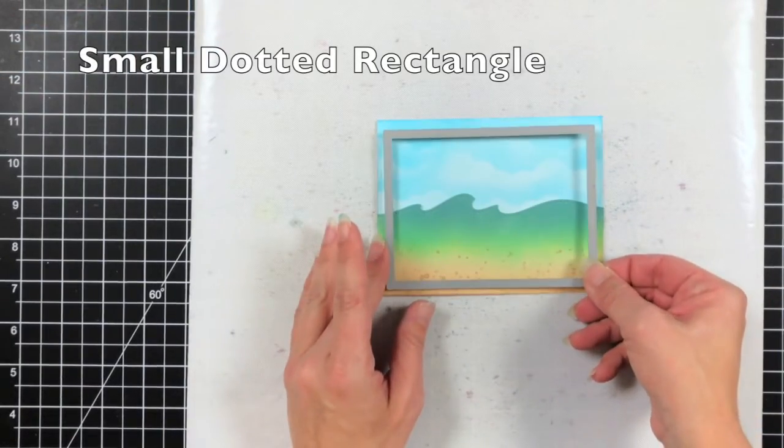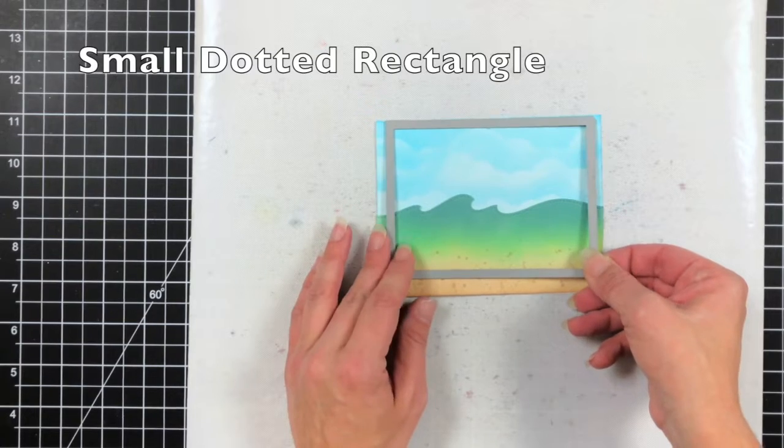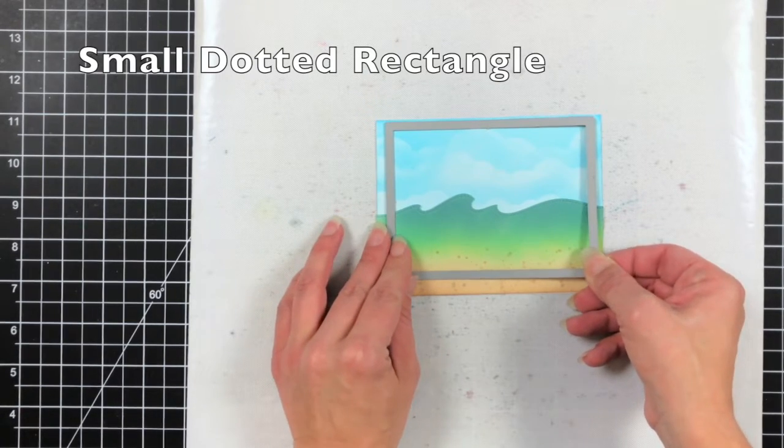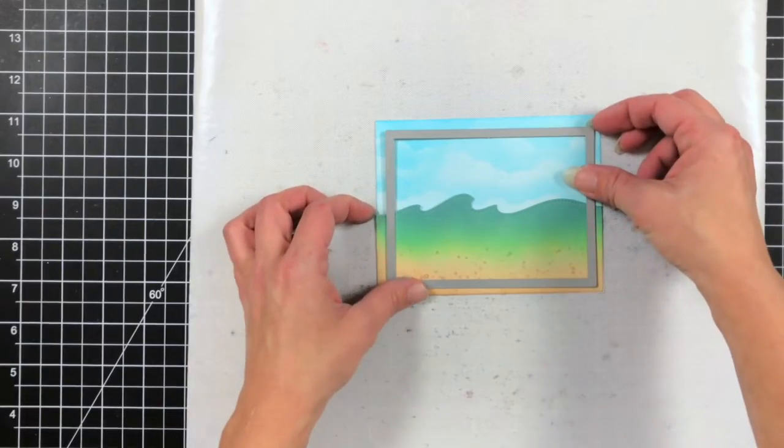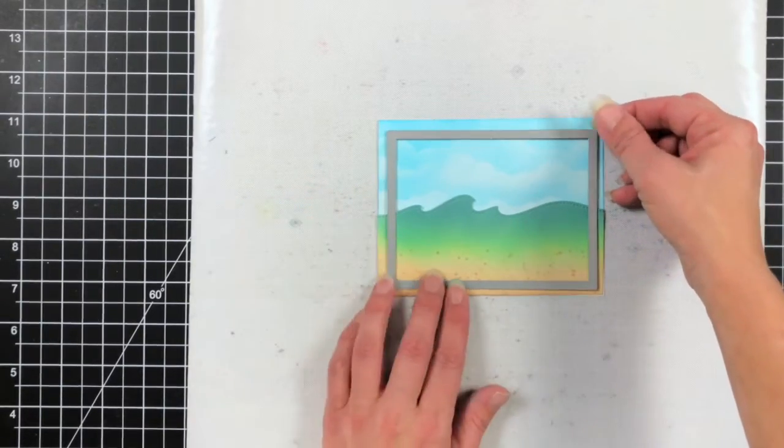So this is just a look at what it's going to look like with the waves on top and then I'm going to take the small dotted rectangle and I'm going to die cut both of these pieces around that so I'll have a nice frame for my card.